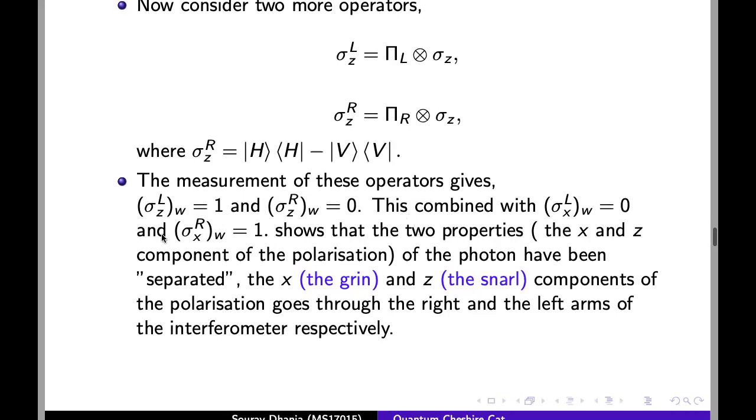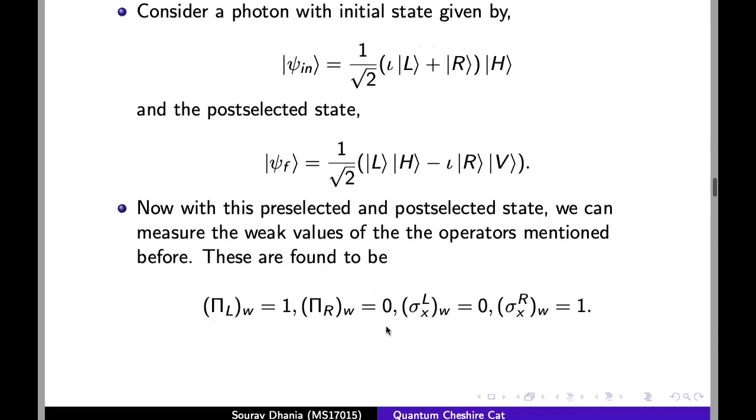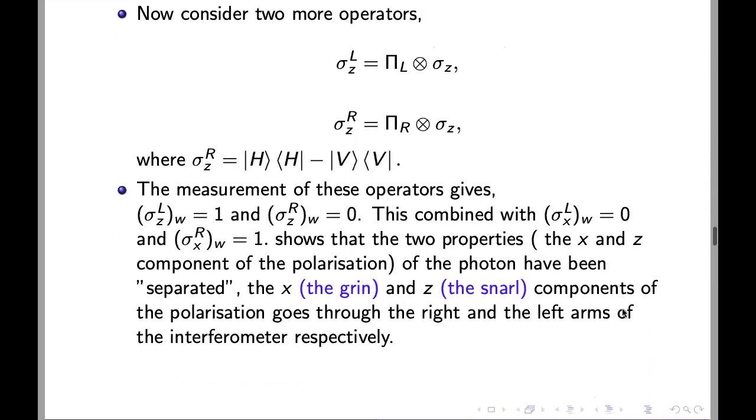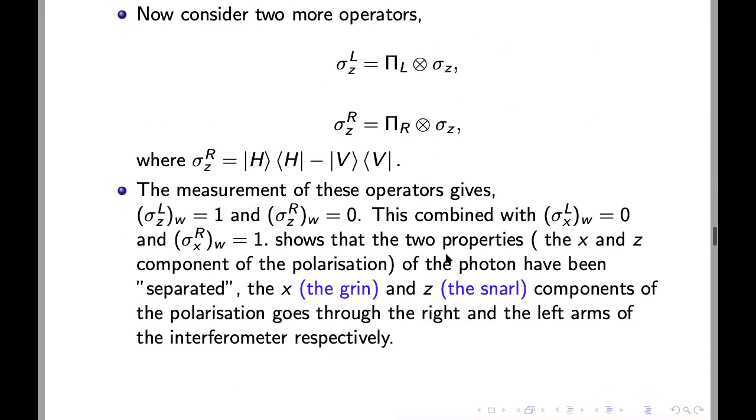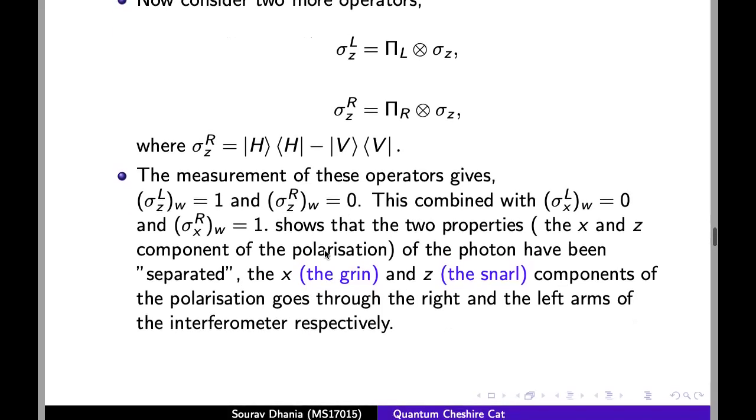Now if we combine these results with the previous results, this combined with the previous results shows that the properties, the x and z component of the polarization of the photon have been separated. The x and z component, which we also for analogy called the grin and the snarl of the cat, the x and z component of the polarization goes through the right and the left arms of the interferometer respectively. So we can even decouple the two properties of the same system.